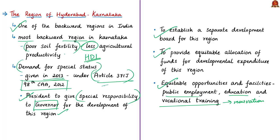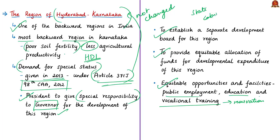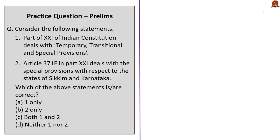The Hyderabad Karnataka Region Development Board was established on November 6, 2013. Its jurisdiction is spread over 40 assembly constituencies of the six districts: Bidar, Bellari, Kalaburagi (also known as Gulbarga), Koppal, Raichur, and Yadgir. Note that in the Constitution under Article 371J the name 'Hyderabad Karnataka Region' has not been changed, as that would require a constitutional amendment through Parliament. The state cabinet of Karnataka has decided to change the name within the state as Kalyana Karnataka.